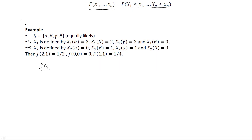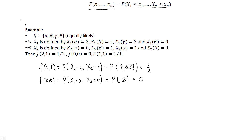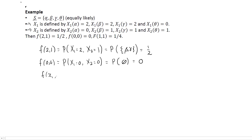As an example, f(2,1) is the probability that x1 takes the value 2 and x2 takes the value 1. This is the probability of the event {beta, gamma}, which equals one half. The joint PMF evaluated at (0,0) is the probability that x1 is 0 and x2 is 0. Since no outcome maps to 0 under both x1 and x2, this is the probability of the empty set, so it equals 0. In the same fashion we can evaluate f(x1, x2) for any values.